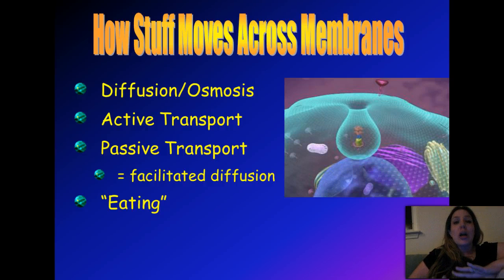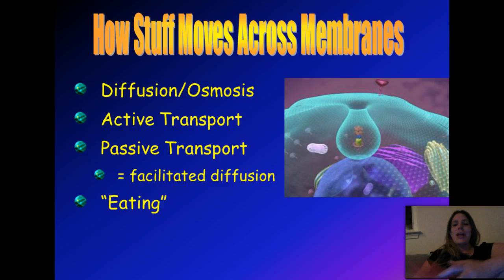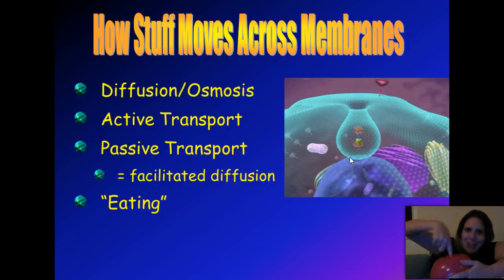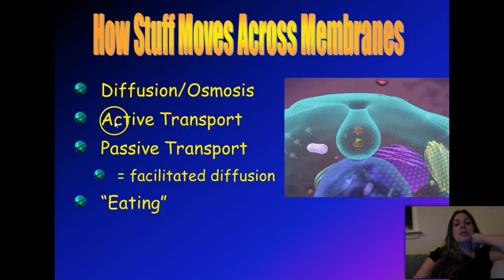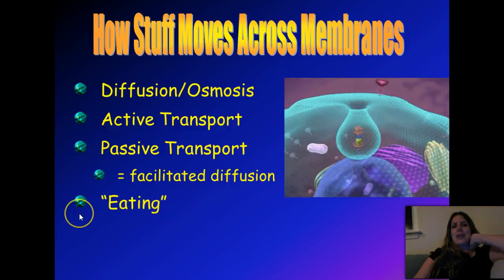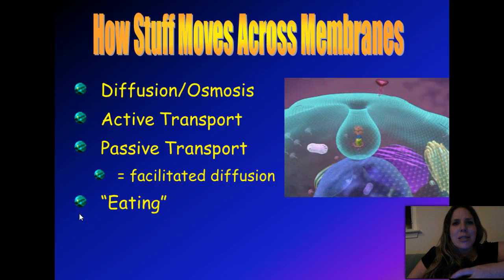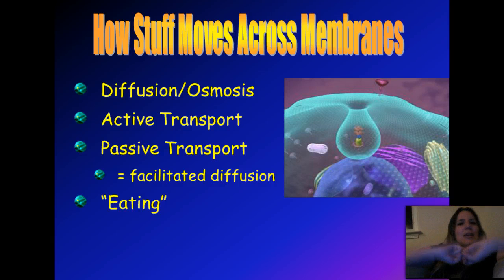Here are the four ways we're going to talk about getting molecules across that cell membrane. We're going to be talking about the principles of diffusion and osmosis, active transport, passive transport also called facilitated diffusion, and the way cells eat which is called phagocytosis. If stuff's coming into the cell we call it endocytosis; if you're taking it out of the cell, we call that exocytosis.